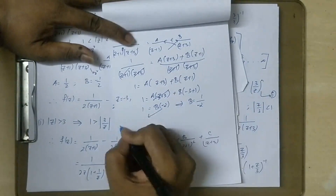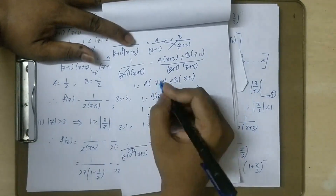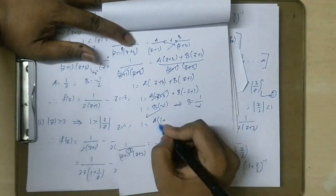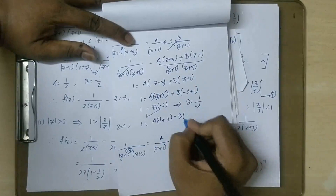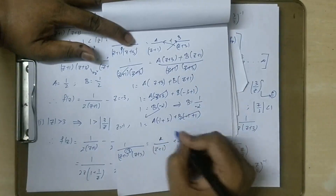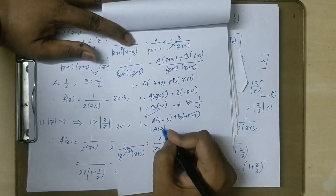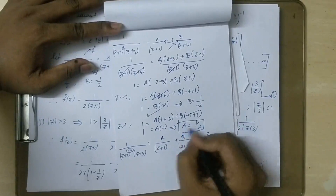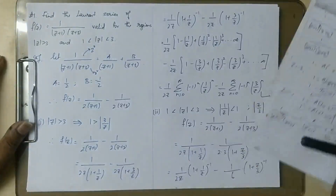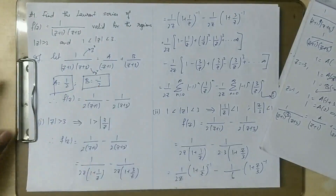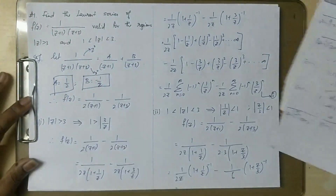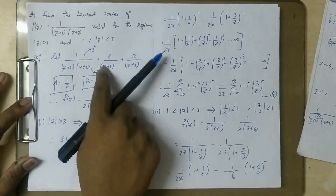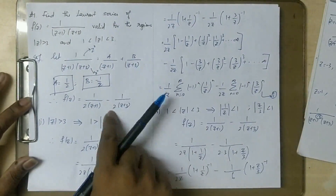Similarly, for term z equal to minus one: A into (minus one plus three) equals one, so A is equal to one by two. So A value is one by two, B value is minus one by two. The partial fraction result is: one by two times one by (z+1) minus one by two times one by (z+3).